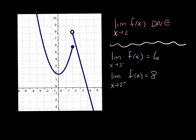Because these two are unequal, the limit as x approaches 2 does not exist. But this is the way that we'll notate the limit from the left versus the limit from the right.